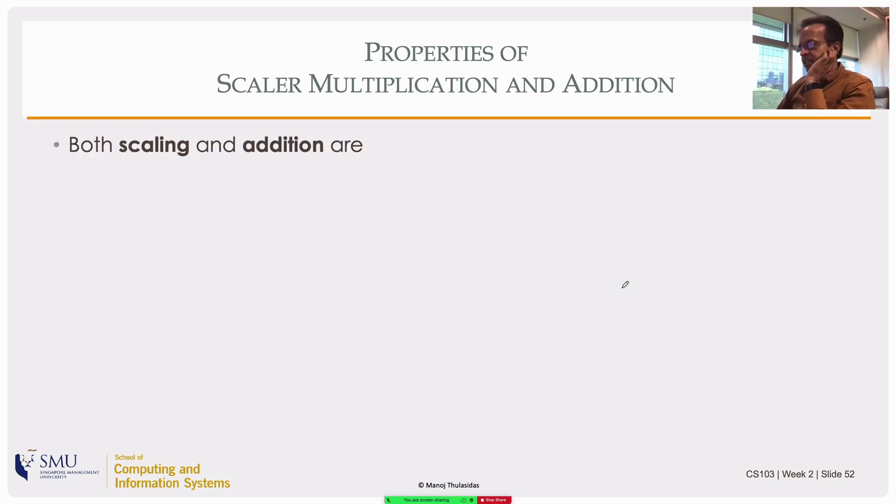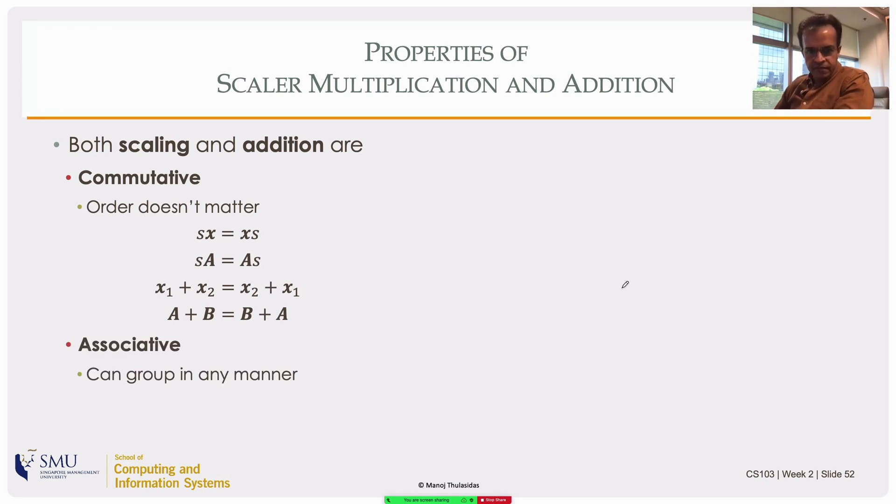So let me get a bit formal and list all the different properties of these guys, scaling, scalar multiplication, and addition. They're commutative. Order doesn't matter, so you can multiply in any order. These are consequences of the way we defined these additions and the scalar multiplication.